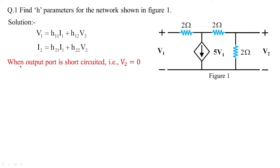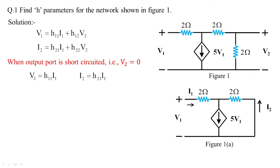When the output port is short-circuited, from the standard equations we get v1 = h11·i1 and i2 = h21·i1. When we short-circuit the output port, figure 1 changes to figure 1a. Since v2 = 0 (output is shorted), i2 flows into the circuit dependent upon i1. We also have the voltage-dependent current source 5·v1. I will employ a node whose voltage is v and apply KCL at that node.